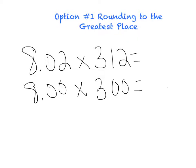So now that I have it rounded, let's go ahead and figure out what my answer is. I have 8 times 300. Well, I know 8 times 3 is 24. And I have two zeros I have to attach to it. So my answer is going to be 2,400.